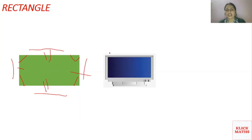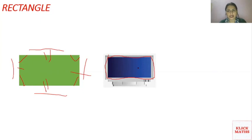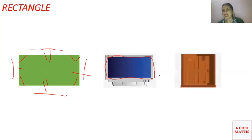Now let's relate this. You can see — this is also a rectangle. If you look at the outer part, the face is in a rectangle shape: four line segments and opposite sides are the same. You can see this is a dog, and if you look at its outer part, it is also a rectangle.